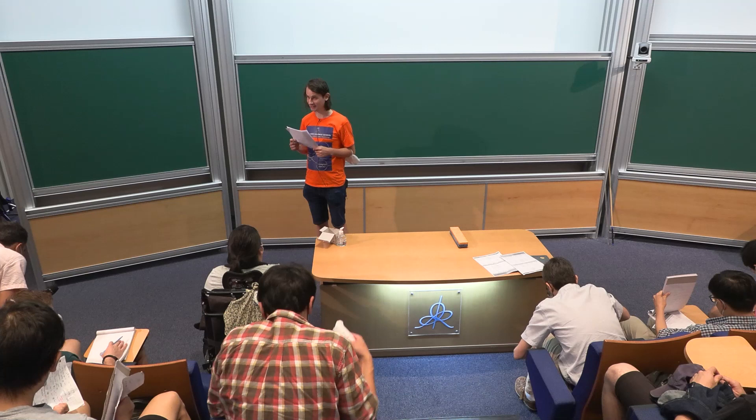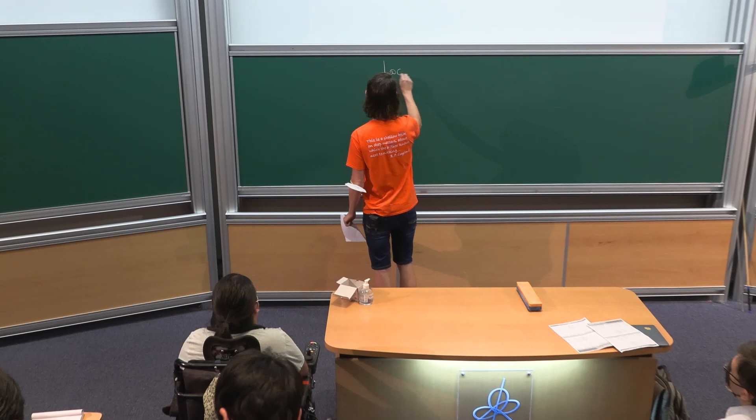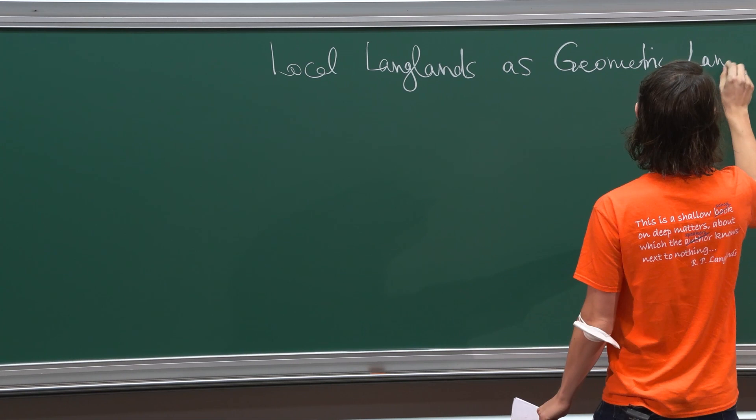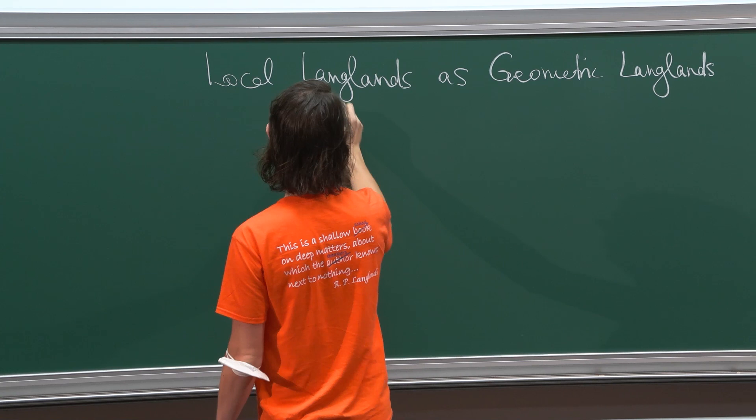Thanks a lot for organizing this conference, as I'm learning a lot. And thanks for the invitation to speak. I want to talk about, maybe a more descriptive title: Local Langlands as Geometric Langlands on the Fargues-Fontaine curve.